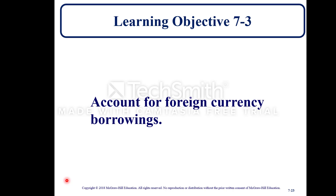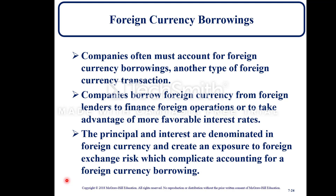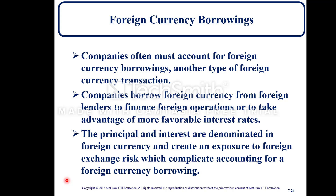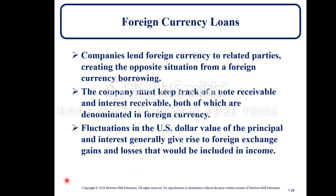Learning Objective 7-3: accounting for foreign currency borrowings. Companies often borrow foreign currency from foreign lenders to finance foreign operations or to take advantage of more favorable interest rates. The principal and interest are denominated in foreign currency, creating exposure to foreign exchange risk, which complicates accounting. Companies also lend foreign currency to related parties, creating the opposite situation. They must track notes receivable and interest receivable denominated in foreign currency; fluctuations in U.S. dollar value of principal and interest generally give rise to foreign exchange gains and losses included in income.